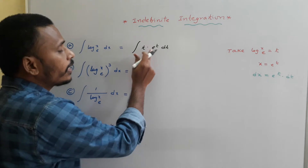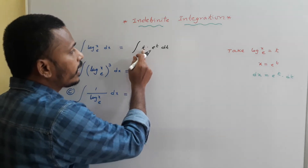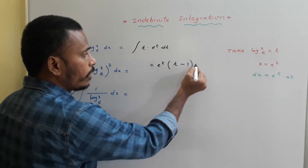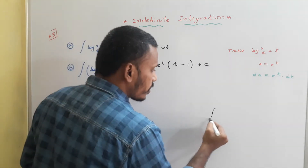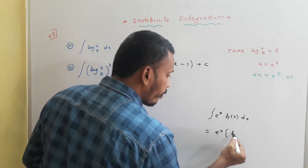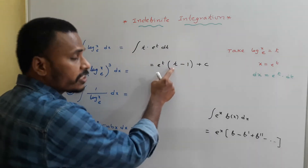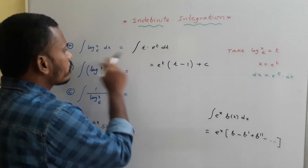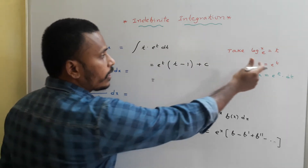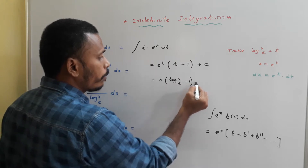Now, what is integral of e^t · t dt? As we discussed in the last class, integral of e^t · t dt is simply e^t · (t − 1) + c. Using the same: function is t and its derivative is 1. Since the given problem is in terms of x, we convert back: e^t is x, and t is log x (base e). So the answer is x(log x − 1) + c.